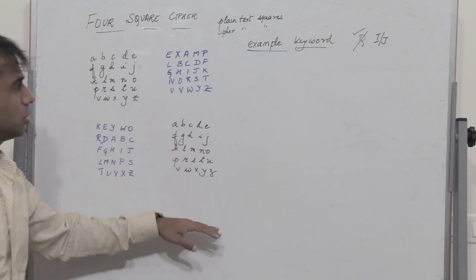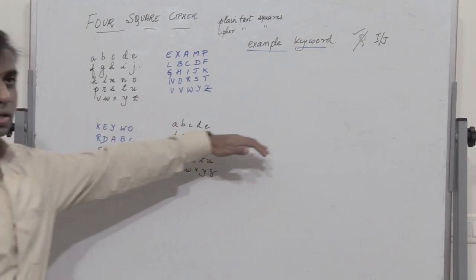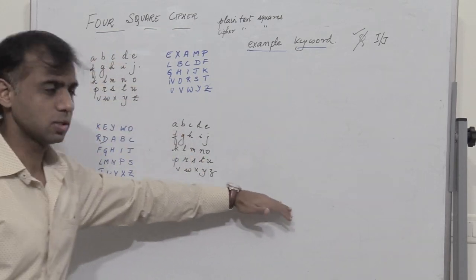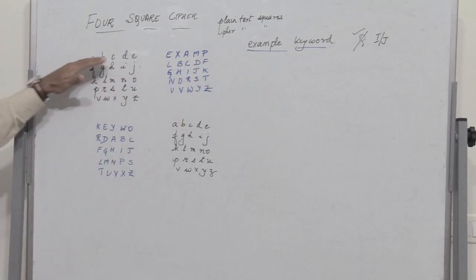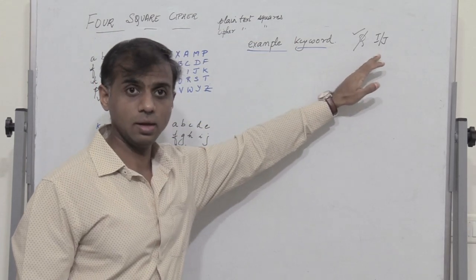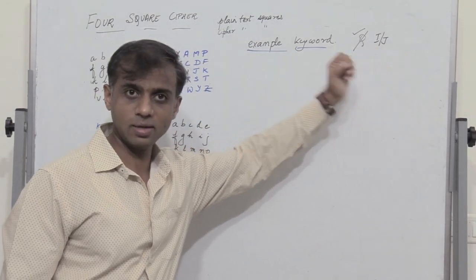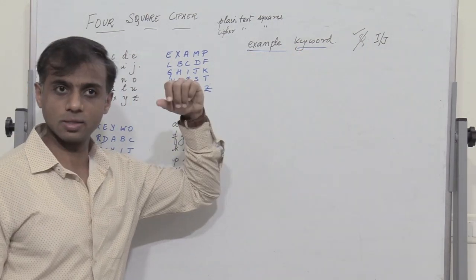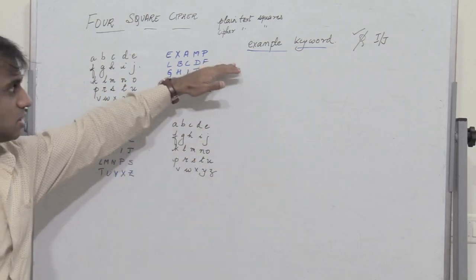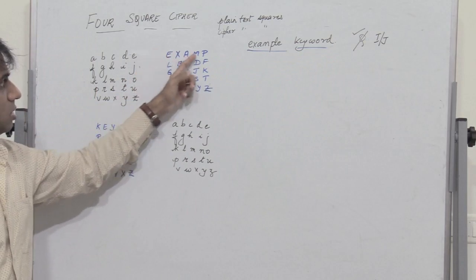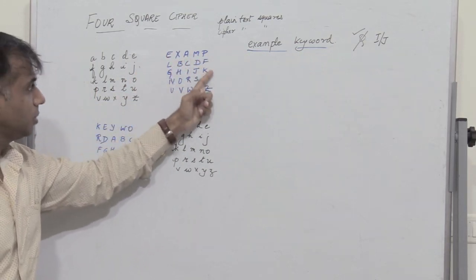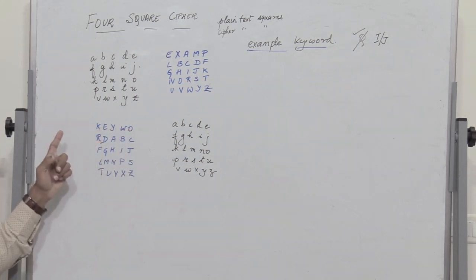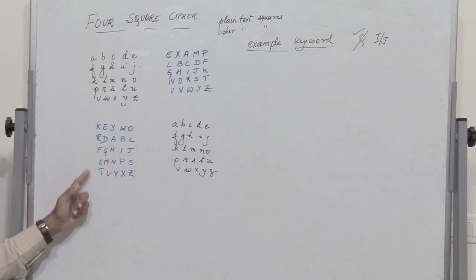Now I have all four squares. To summarize: the upper-left and bottom-right squares are plain text squares where we write all alphabets in order, eliminating Q. The upper-right and bottom-left are the ciphertext squares. For encryption we need two keywords — here 'example' and 'keyword' — and for each keyword we write its unique letters followed by the remaining alphabets in order to form each ciphertext square.